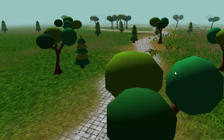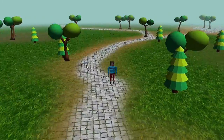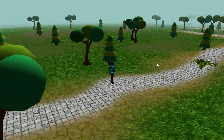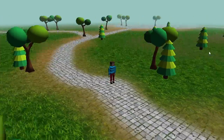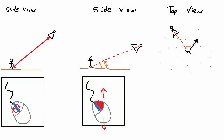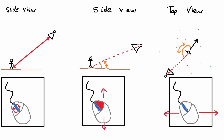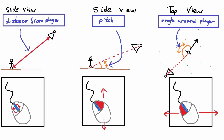Finally, the user can also move the camera around the player so that you can see the player from different angles. If we look at this from above, this is done by simply changing this angle here, and we're going to program this angle to be controlled by moving the mouse left and right while the left mouse button is pressed. Those are the three things about the camera that the user can control.